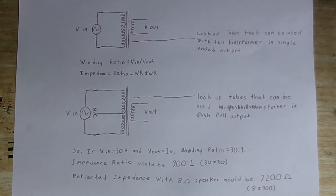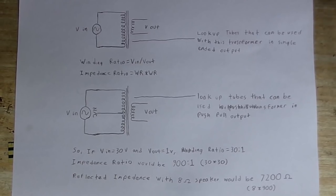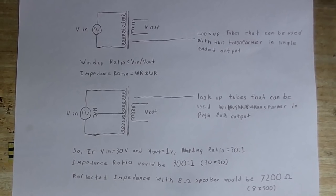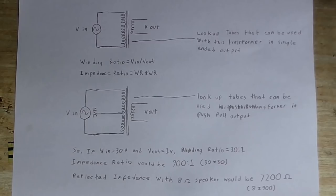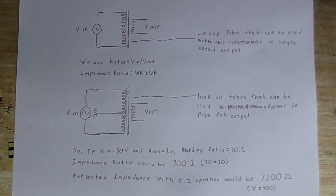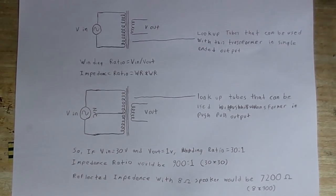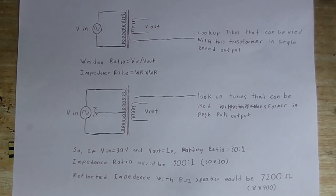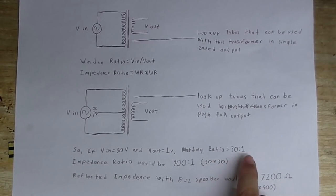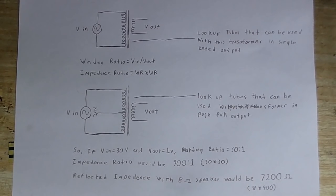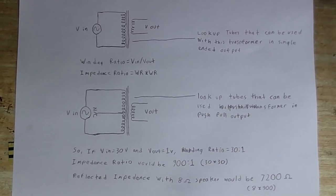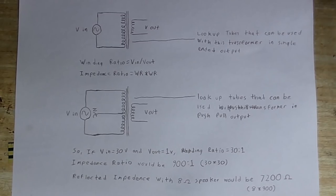Then we need to find the impedance ratio. Because impedance and DC resistance are not the same thing. Impedance is what AC sees. DC resistance is what DC sees. So we need to find the impedance ratio. That ratio which is winding ratio squared. So let's say if it was 30 to 1, it would be 900 to 1 because that's 30 times 30 or 30 squared.